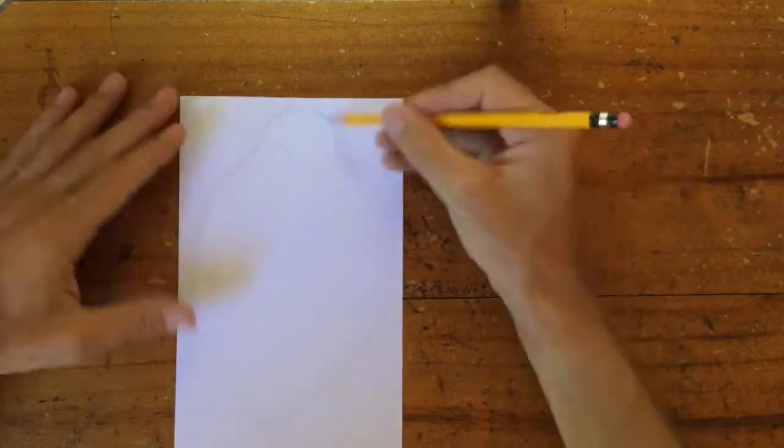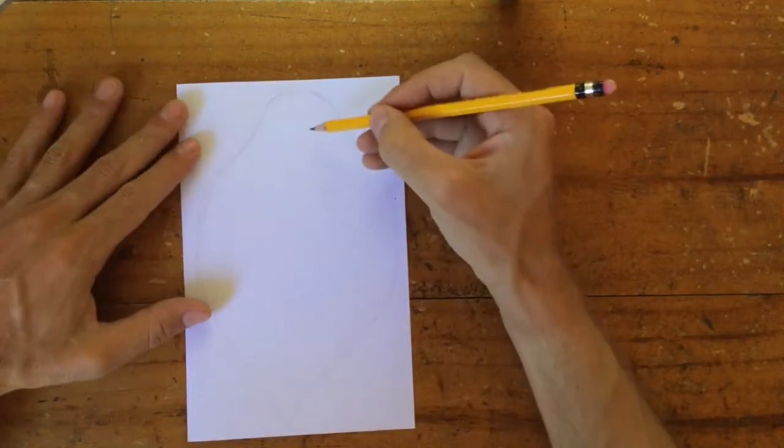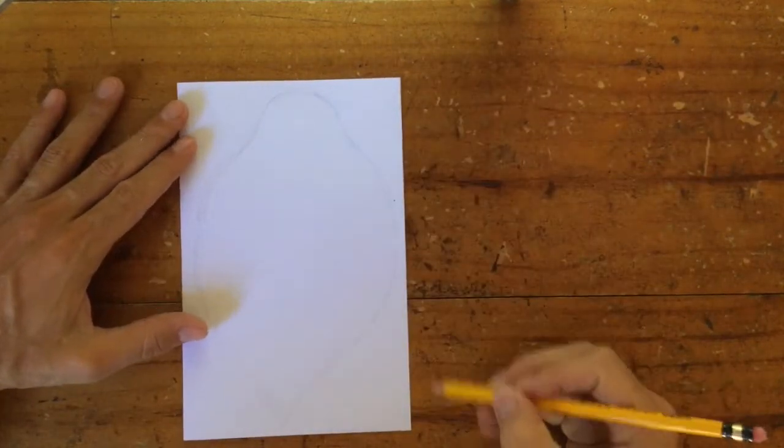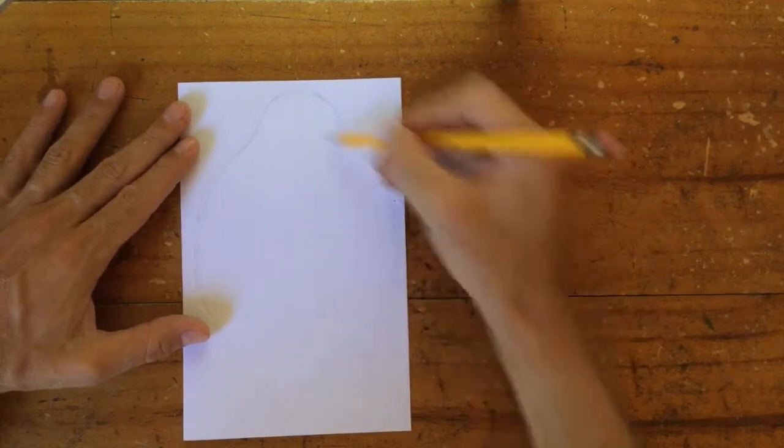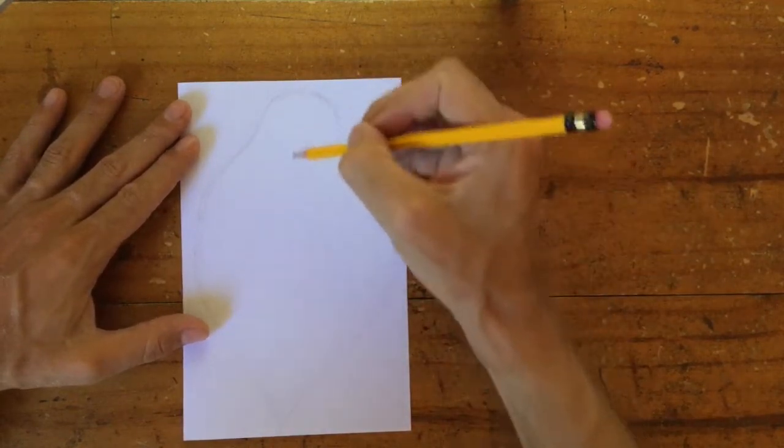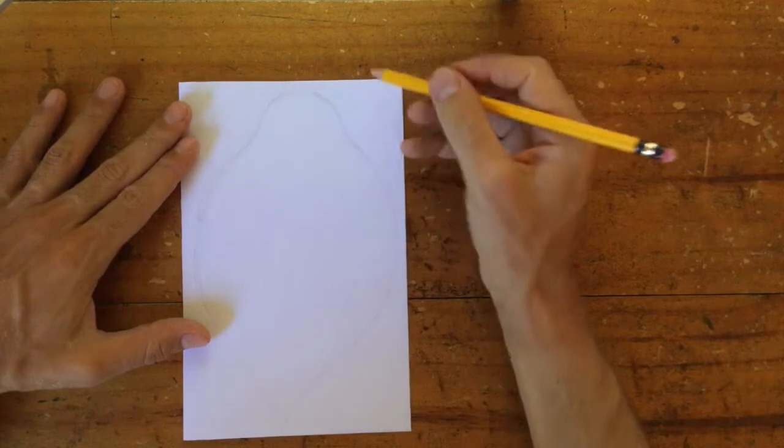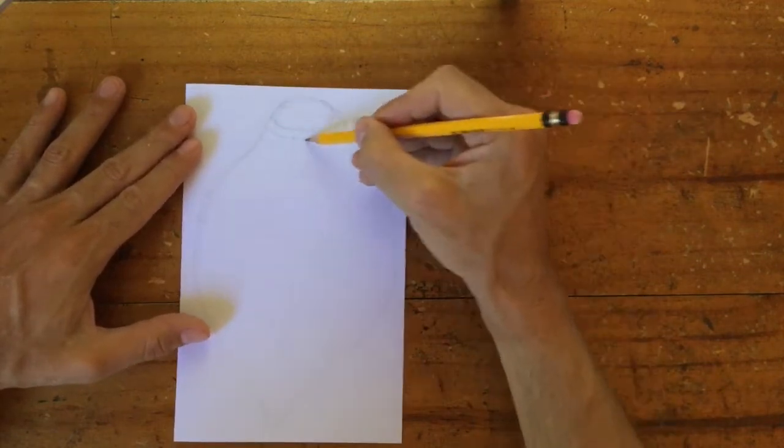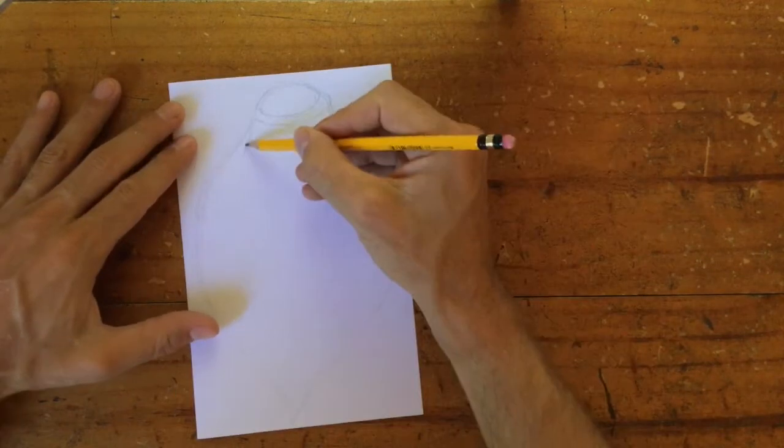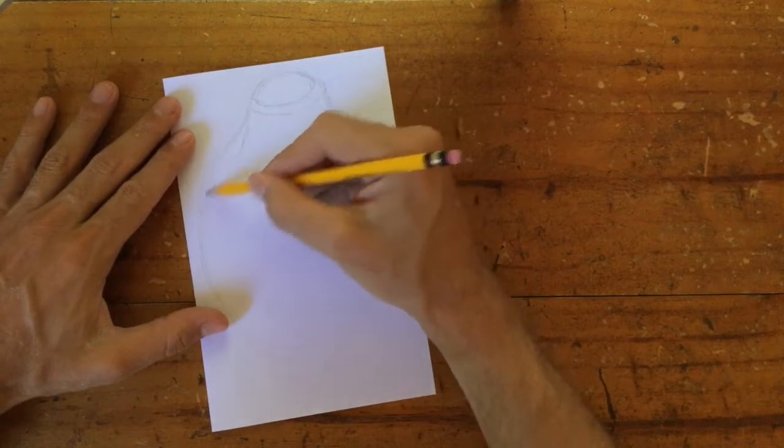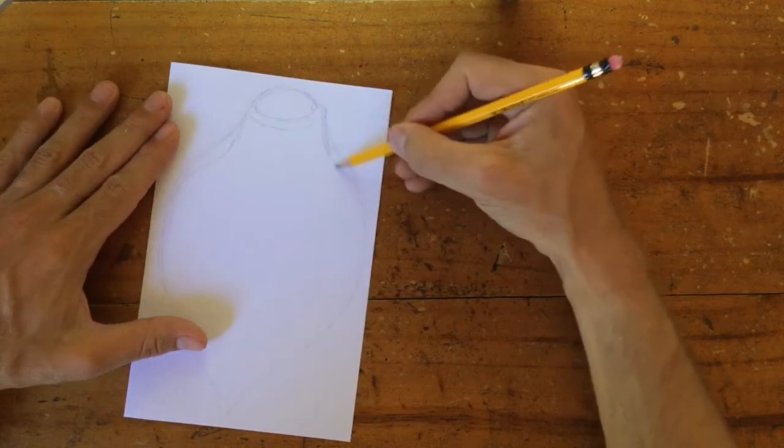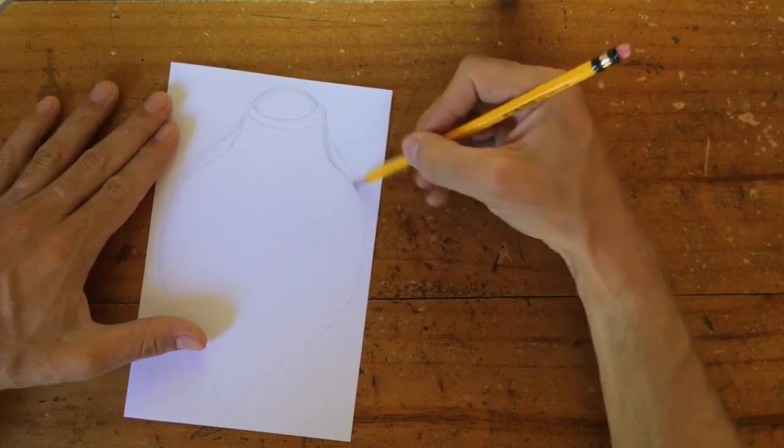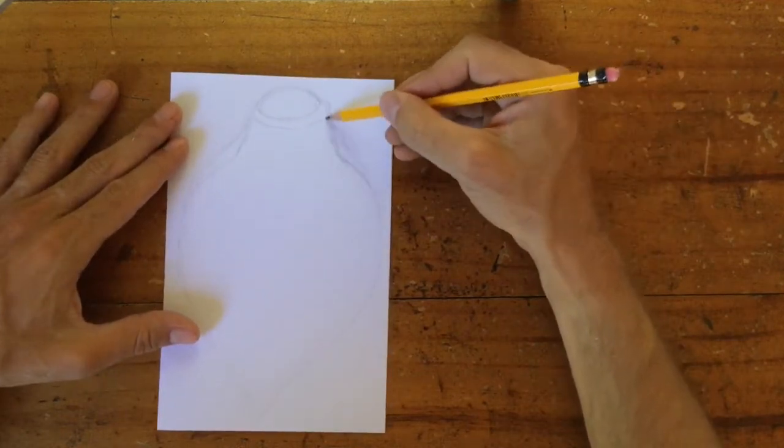Next we're going to draw in the different faces and the lines that make up Joseph, Mary and Jesus. So I'm already starting to change this shape and that's okay because I press lightly so it's easy to erase.